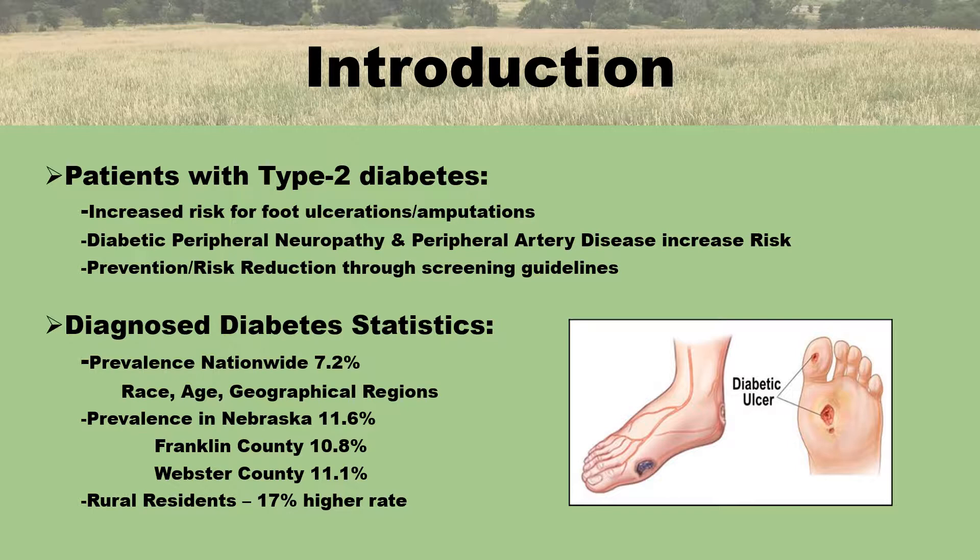Diabetic foot ulcers are the leading cause of non-traumatic lower extremity amputations in the United States. Diabetic peripheral neuropathy and peripheral artery disease are directly related to the development of ulceration of the foot and lower extremity. Patients with type 2 diabetes that develop neuropathy have up to a 20% lifetime risk of developing a foot ulcer, and the risk increases to 30 to 35% when combined with peripheral artery disease and foot deformity. Through preventive screenings, assessments for signs of neuropathy and peripheral artery disease help identify patients with loss of protective sensation and impaired perfusion. Comprehensive foot care that includes screening exams and risk assessments reduces the number of these long-term complications.